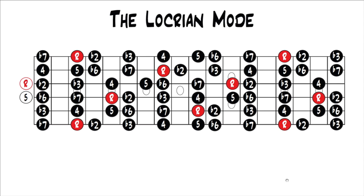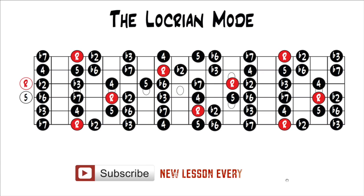This is the last mode of the major scale — the seventh mode — because there are seven notes in the major scale, and building a mode off each of those notes gives you seven modes. The first mode was Ionian, second Dorian, third Phrygian, fourth Lydian, fifth Mixolydian, sixth Aeolian, and now we're on the seventh and last one: Locrian.